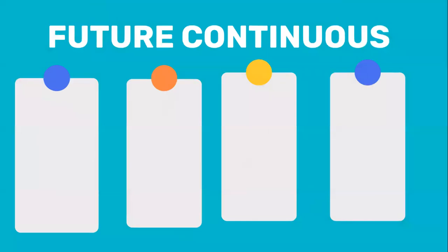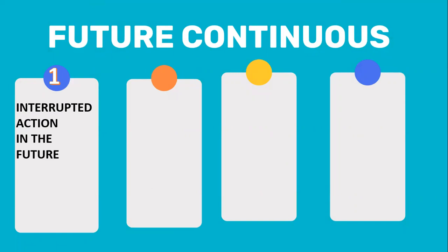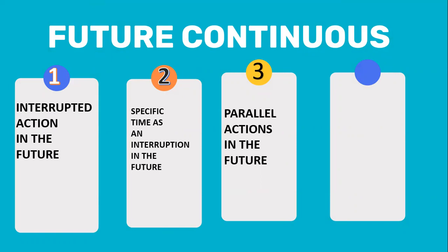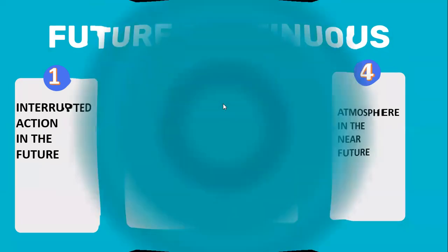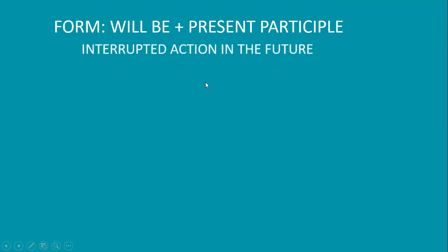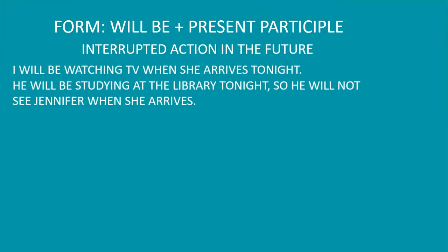Then comes future continuous. Its four usages are: to talk about interrupted action in the future, to use specific time as an interruption in the future, to talk about parallel actions in the future, and to create an atmosphere in the future. The sentence structure is: will be plus present participle.